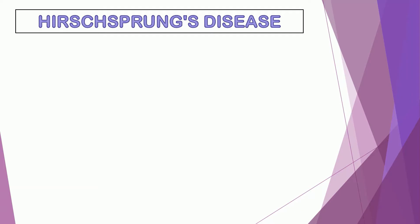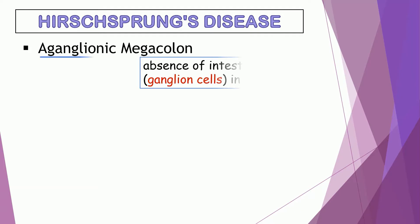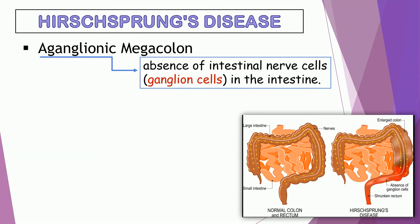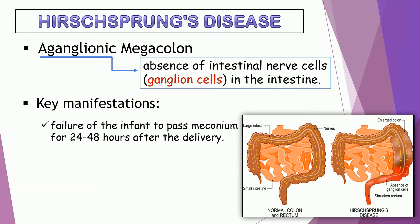Hirschsprung's disease. It is also known as aganglionic megacolon. Aganglionic means the absence of intestinal nerve cells in the intestine. The ganglion cells are responsible for bowel relaxation. Without them, the bowel remains constricted and narrow. That's why the first common manifestation is the failure of the infant to pass meconium for 24 to 48 hours after delivery.